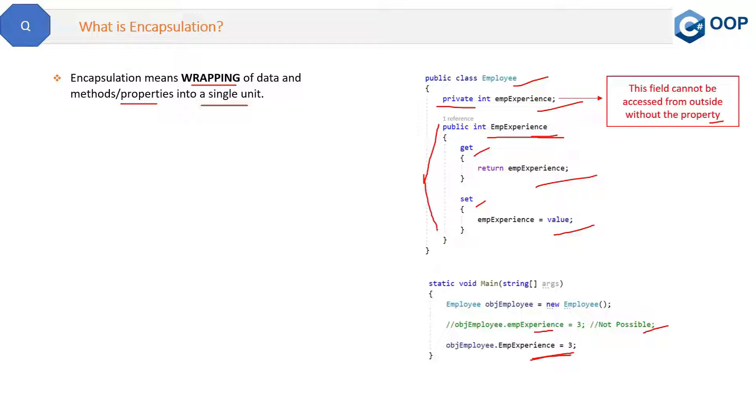This is because data and field are the same, and property and functions are the same. So if we will again repeat the definition, it is basically wrapping of data, which is field, and methods, which is properties, into a single unit. And then we can access this data outside of this class. Now let me show how you can violate this encapsulation.